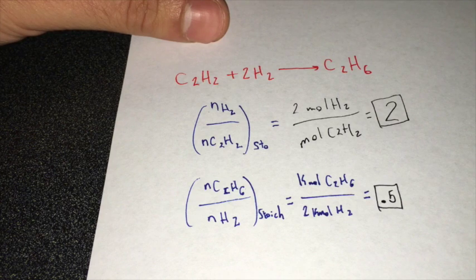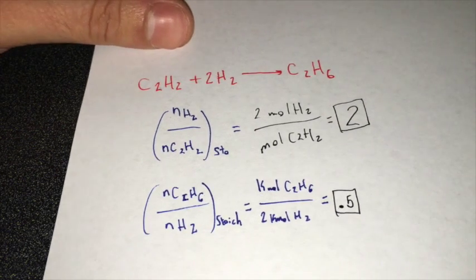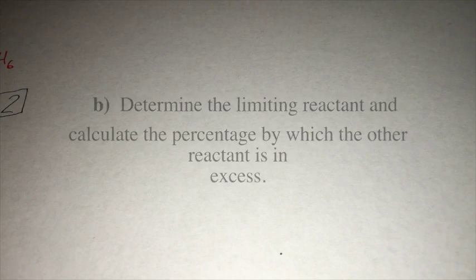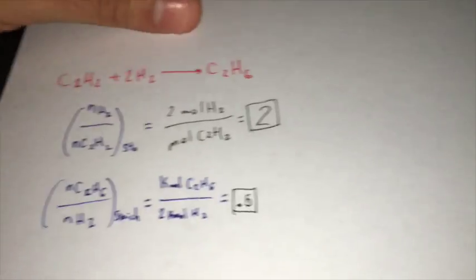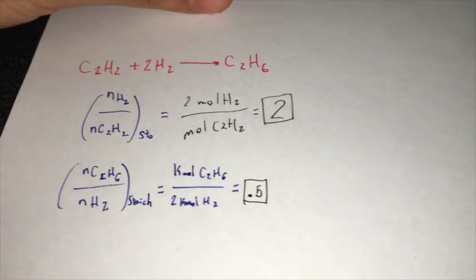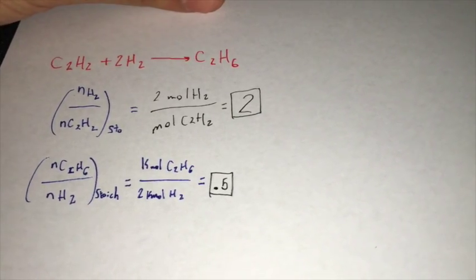So that's our part A. Moving on to B, to identify the limiting reactant, we have to compare the actual mole ratio of H2 to C2H2 with the stoichiometric ratio.